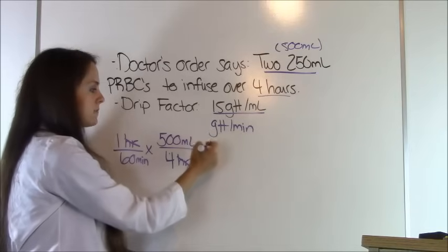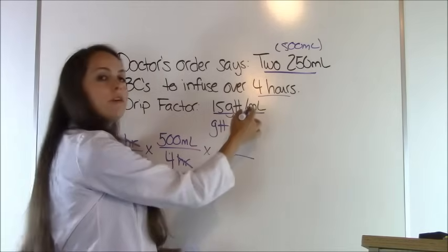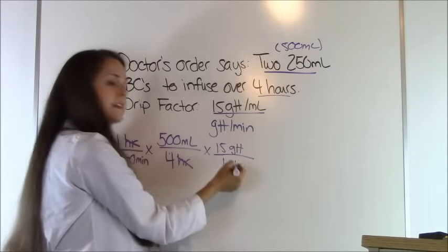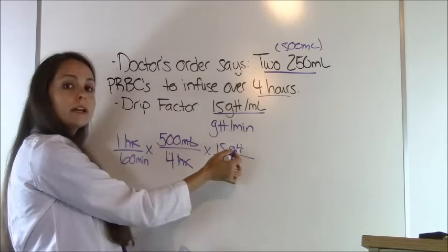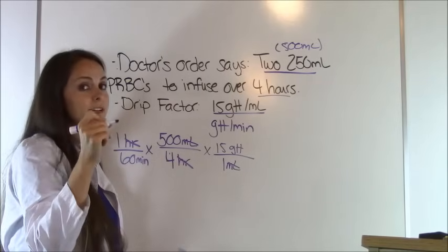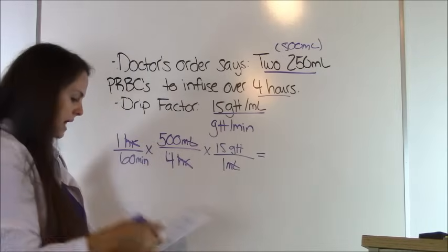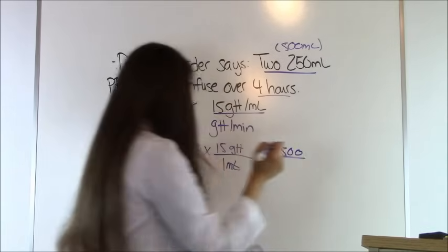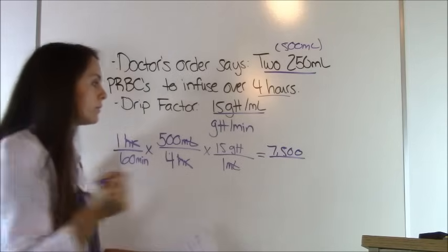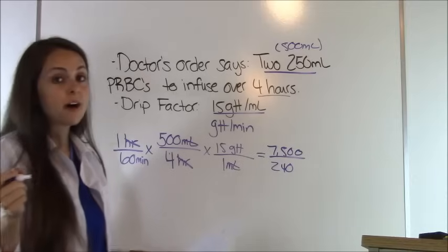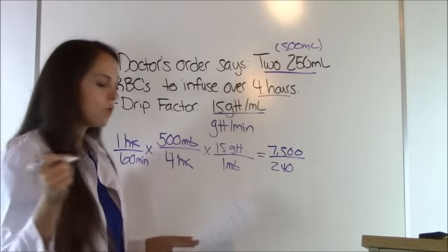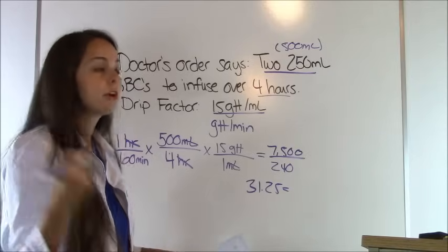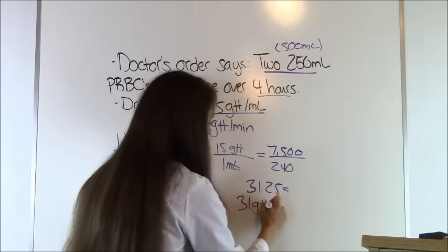From the problem, 1 milliliter equals 15 drops, which cancels out milliliters — we're already in drops per minute. Multiply the top: 1 times 500 times 15 equals 7,500. Multiply the bottom: 60 times 4 times 1 equals 240. 7,500 divided by 240 equals 31.25. Remember we round to the whole number with drip factors, so the answer is 31 drops per minute.